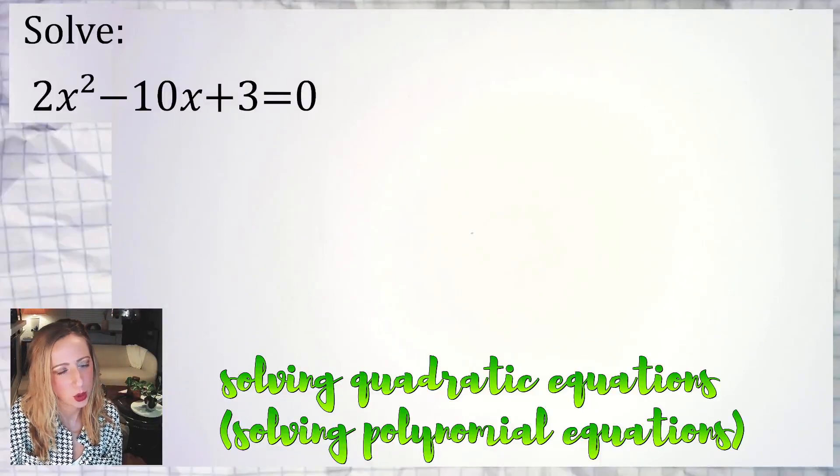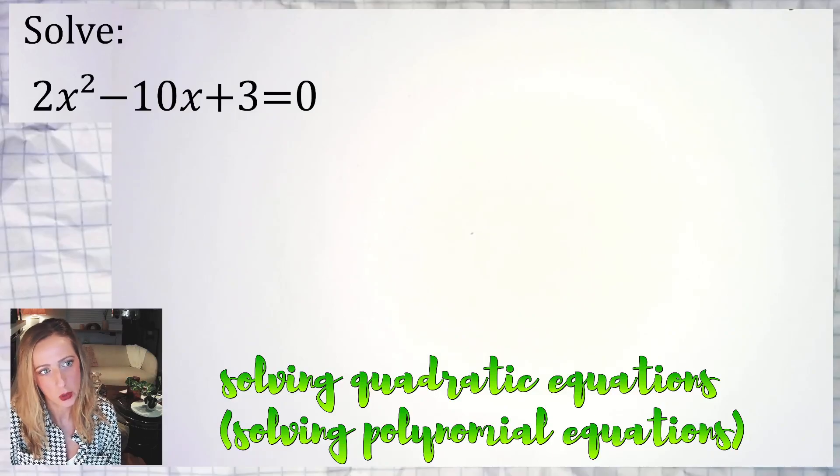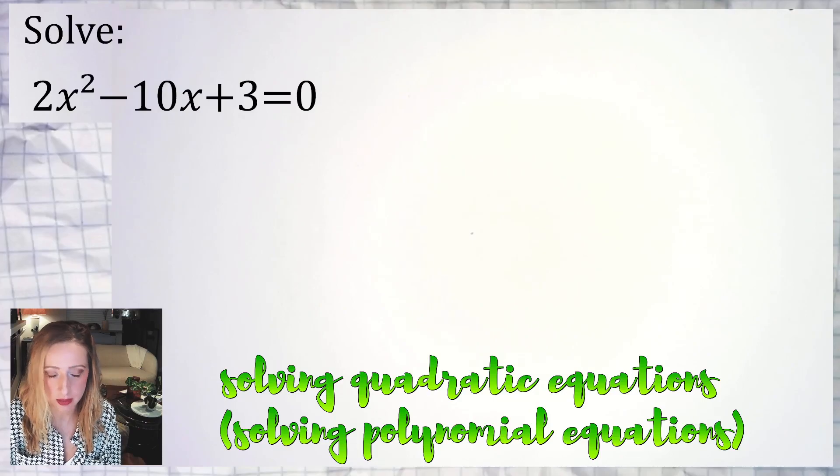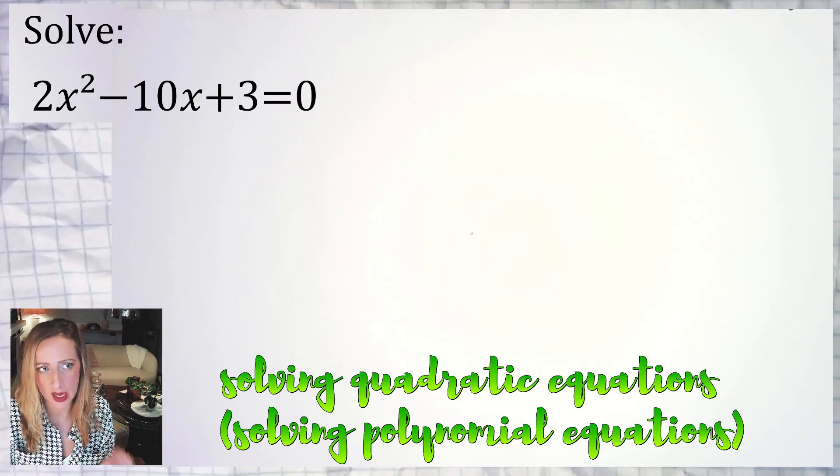Hey guys, here we have an example where we're solving a quadratic equation. This equation looks pretty nice. It's already set equal to zero and that's usually the first step. After recognizing it's an equation, a polynomial equation that we want to solve, and this one happens to be a quadratic trinomial.